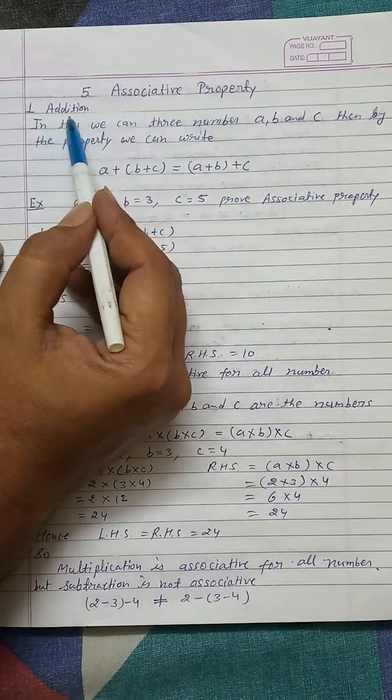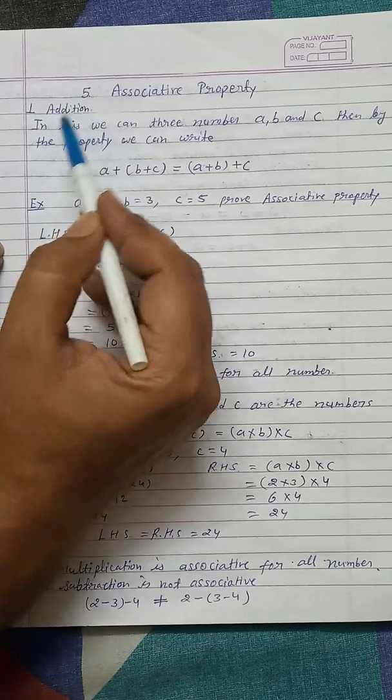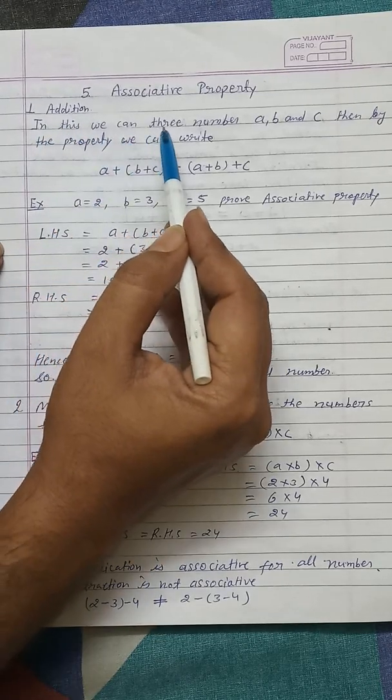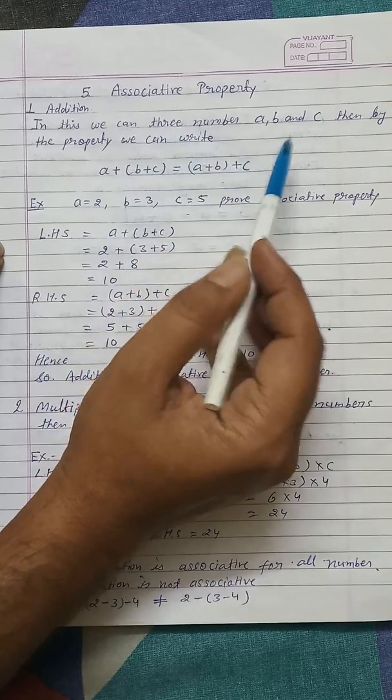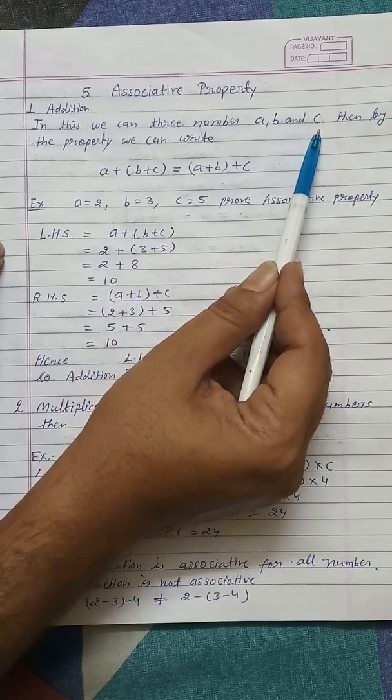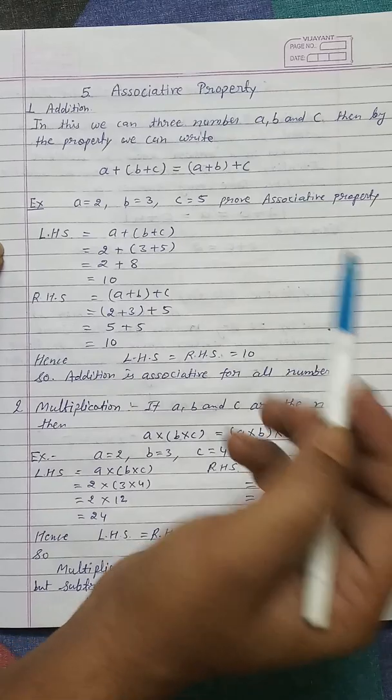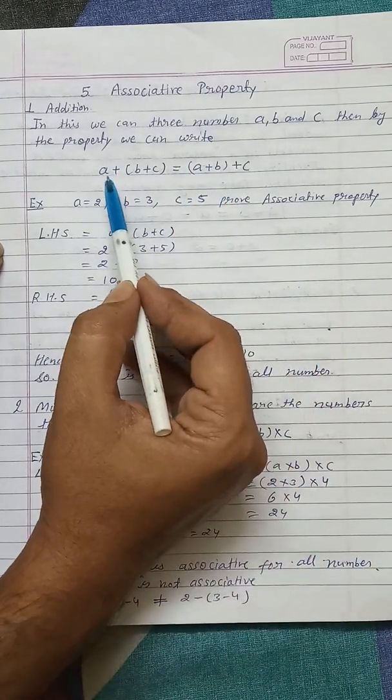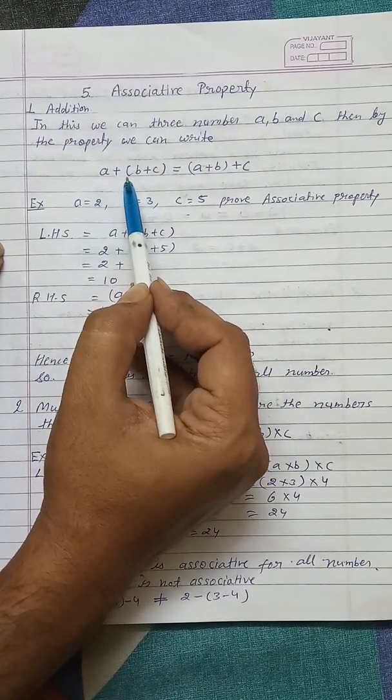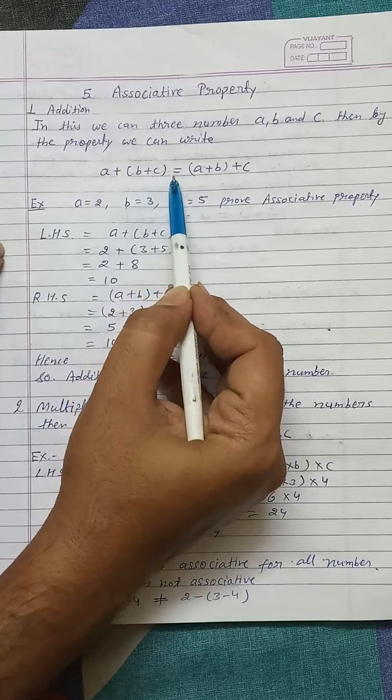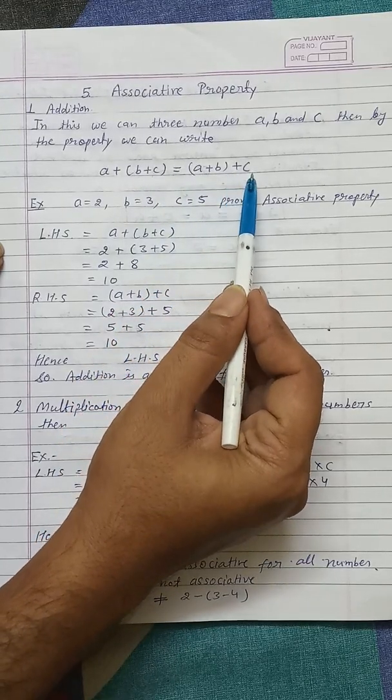Now we take first operation: addition. In this we can take three numbers A, B and C. Then by this property we can write the expression A plus (B plus C) equals (A plus B) plus C.